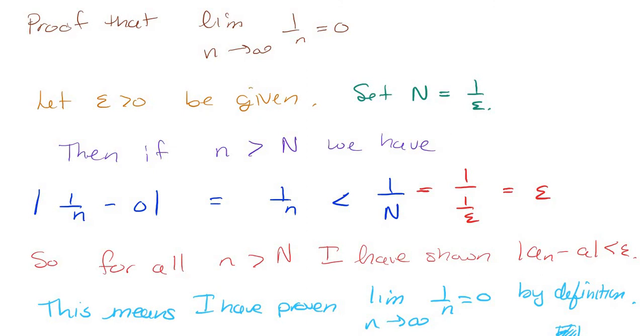But just a quick recap. Forward proof: I set my N out of the blue. Epsilon was given. I set the N equal to one over epsilon. Then, I start with one over n minus zero in absolute value. That's the same thing as one over n. By absolute value, one over n's are positive.